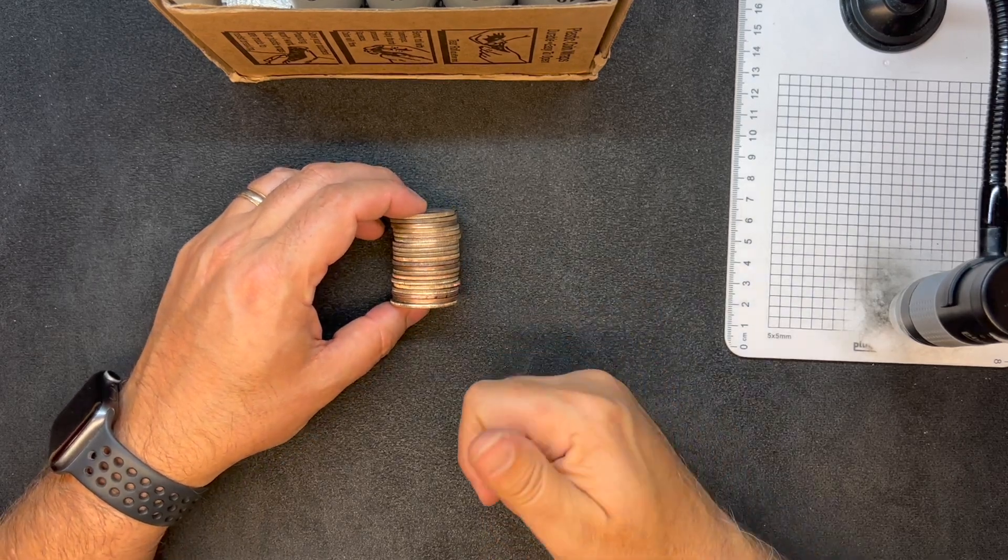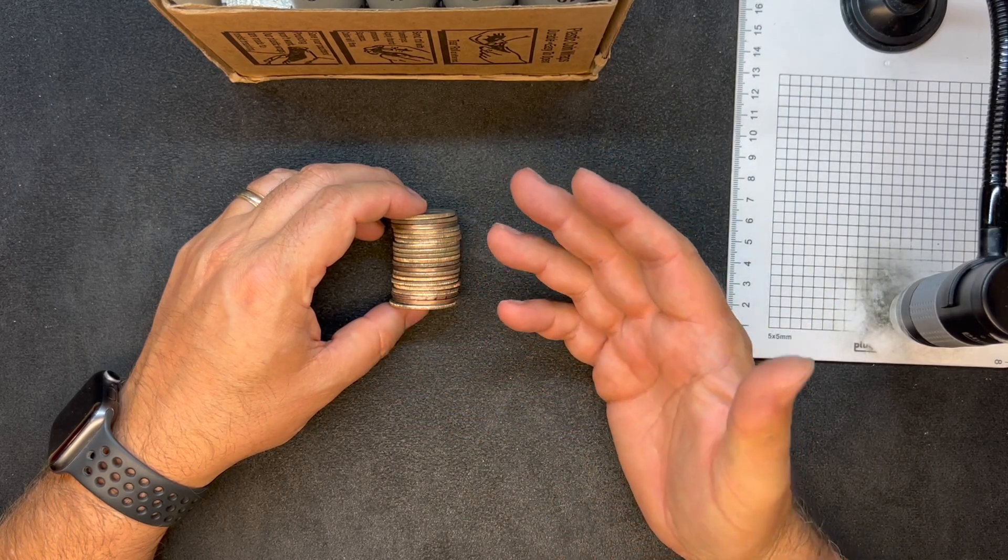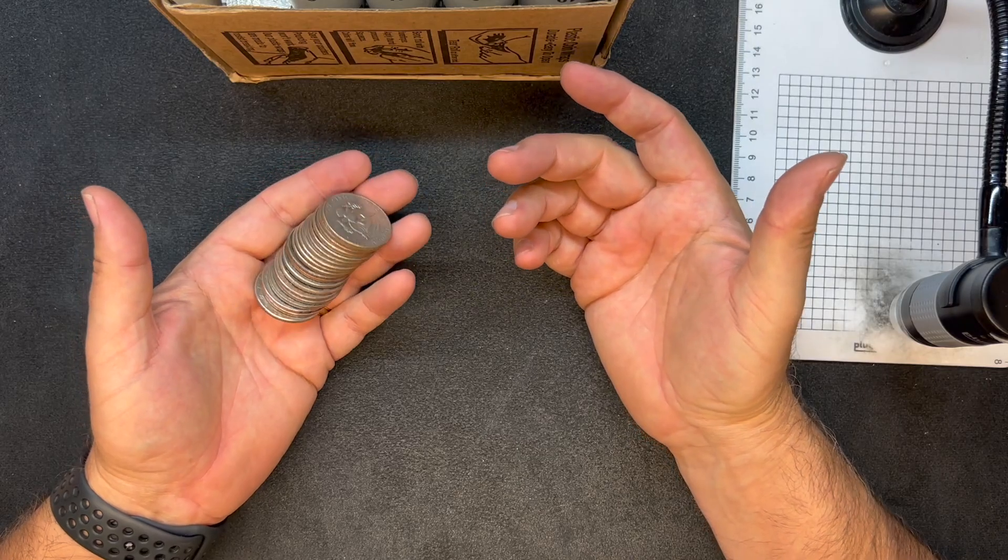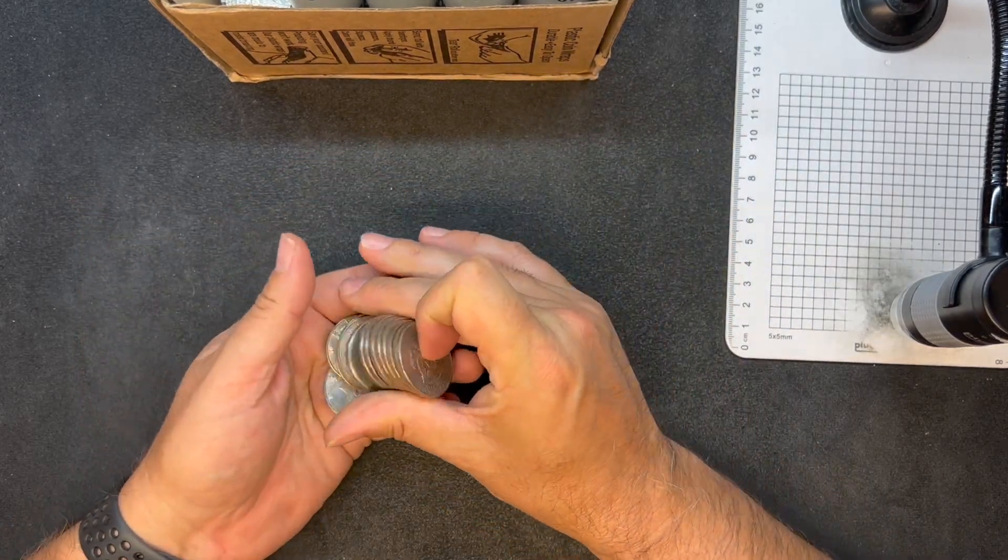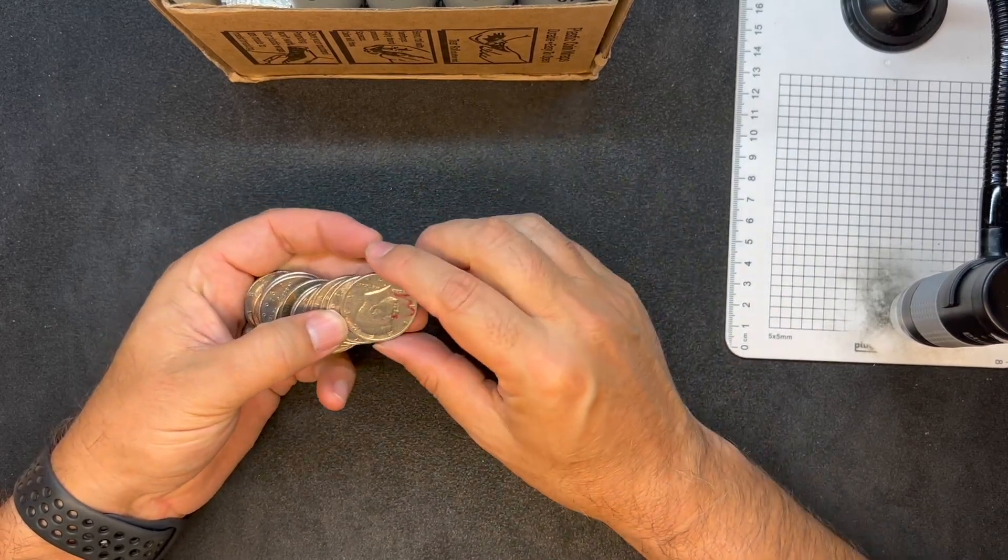But to recap, we will be looking for silver, which 40% silver is 1965 to 1970, 90% silver is 1964 and earlier. And then there's a smattering of varieties, errors, not intended for circulation coins, etc., that we look for as we go through the box.